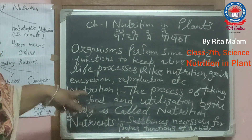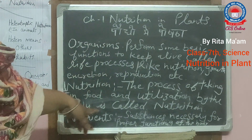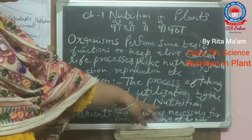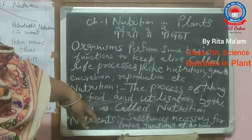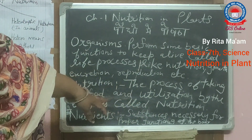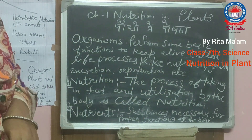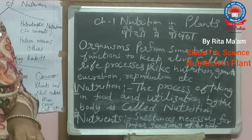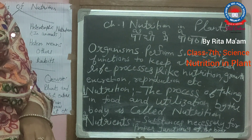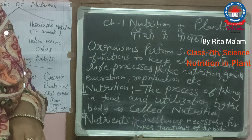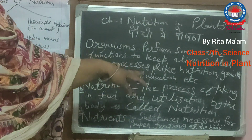Now, how do we get this nutrition? We get nutrition from nutrients. What are nutrients? Nutrients are the substances necessary for the proper functioning of the body. Carbohydrates and fats give us energy, vitamins and minerals protect us from diseases, and proteins provide us growth and keep our digestive system strong.